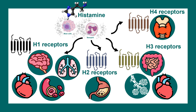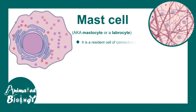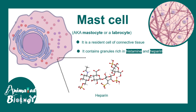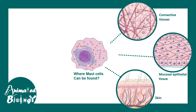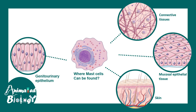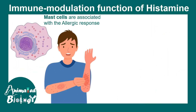Mast cells, also known as mastocytes, are resident cells in the connective tissue. They contain specific granules enriched in histamine and heparin, which are released during an allergic reaction. Mast cells can be found in connective tissue, mucosal epithelial cells, skin, genitourinary epithelium, and respiratory epithelial tissues.